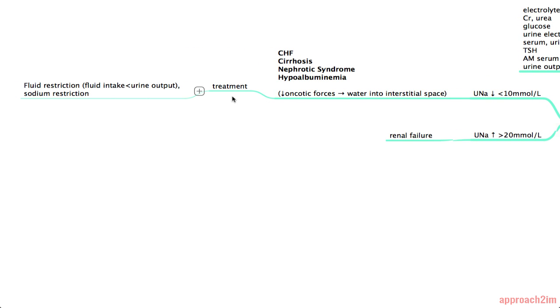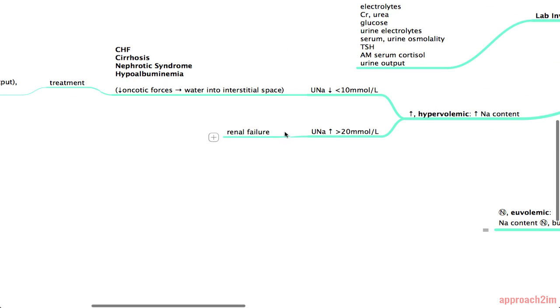Your treatment of these hypervolemic hyponatremic cases is fluid and sodium restriction. And the other possibility is you do urine sodium and it comes back high. And that's the case of renal failure. And that's the whole approach in itself and there will be another video on renal failure.